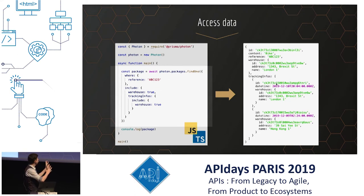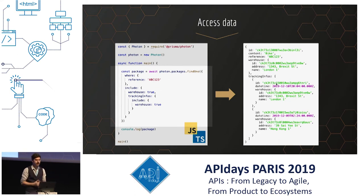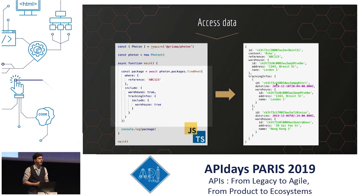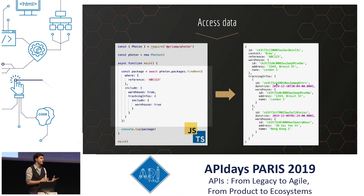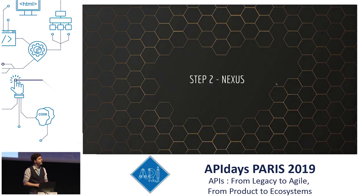Right now we have pretty good access to our database, and just with that we could do a REST API. But we aren't exploiting the full potential of Prisma. To do that, we'll use the second step: Nexus.